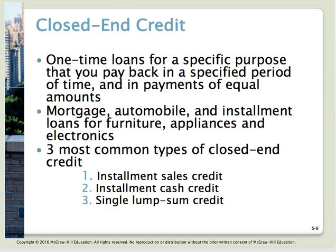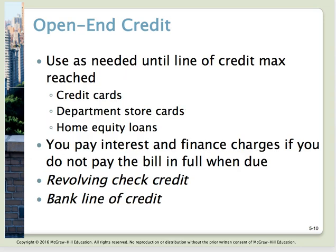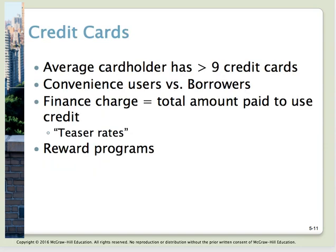For a quick review: closed-end credit includes your mortgage, automobile, and installment loans for furniture, washer/dryer, and similar items. Open-end credit includes credit cards, department store credit cards, home equity loans, and a line of credit from a bank.